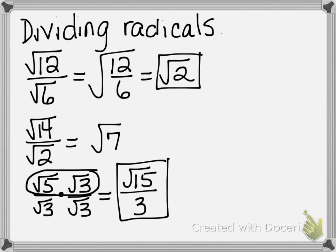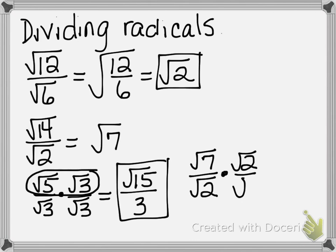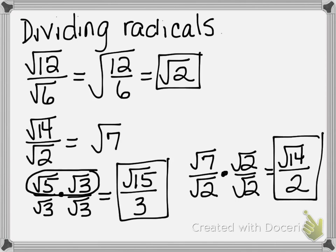Let's try another one: the square root of 7 divided by the square root of 2. Seven can't be divided by 2 to give a whole number, so we're going to multiply top and bottom by the denominator. We end up with the square root of 14 over — remember, the square root of 2 times the square root of 2 is the square root of 4, which is 2. That's all we can do there.